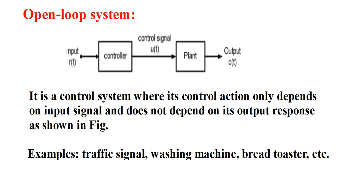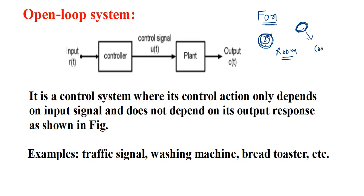Examples of open loop system are traffic signal, washing machine, blade, toaster, etc. Taking a simple example — the fan is an open loop system. If I adjust the regulator of the fan at number two, then the fan will rotate at the speed based on the number two regulator setting. It will not depend on what is the temperature of the room; it will continue to rotate at number two speed whether the room temperature is cool or hot.